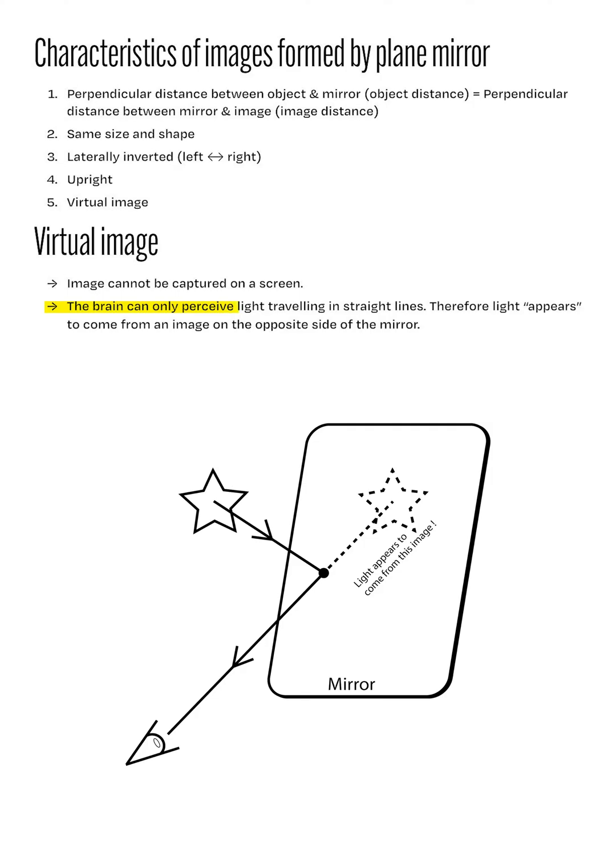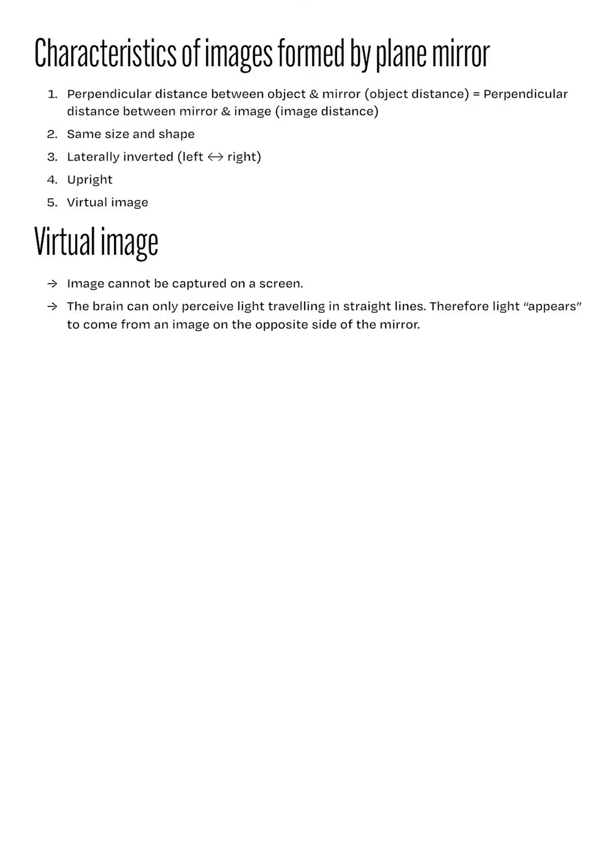This is because our brains can only perceive and interpret light rays that are traveling in straight lines into our eyes. Therefore, due to this assumption, our brains will make us believe that light is coming from an image on the opposite side of the mirror. It is also because of this reason that the images we see appear to be laterally inverted. There are other optical illusions that are caused by assumptions made by our brains.